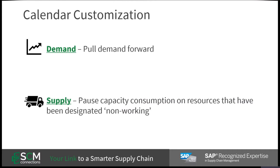For the demonstration today, I'm going to walk you through a global clothing manufacturing company that has a plant located in the Asia-Pacific region. In this example, the plant in question will need to shut down for a week to celebrate the Chinese New Year. While the rest of the network continues to operate, there will be no outbound transportation from this plant.